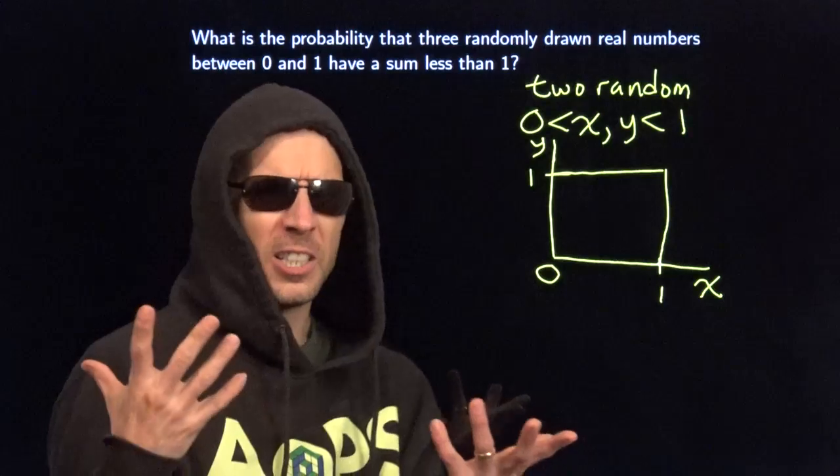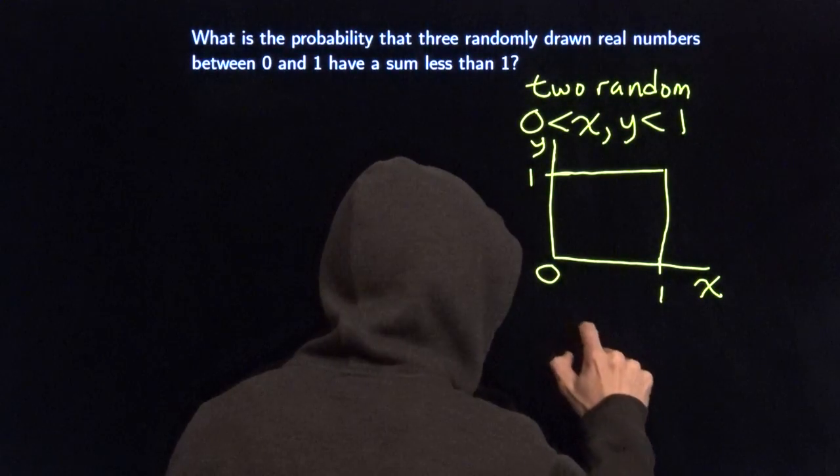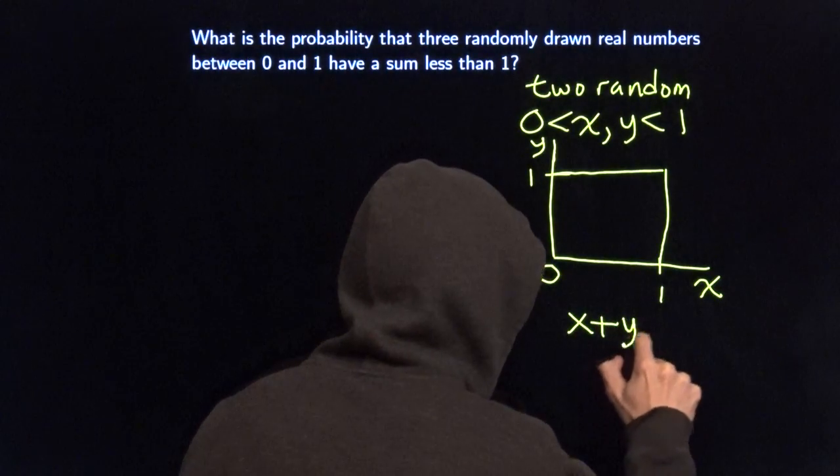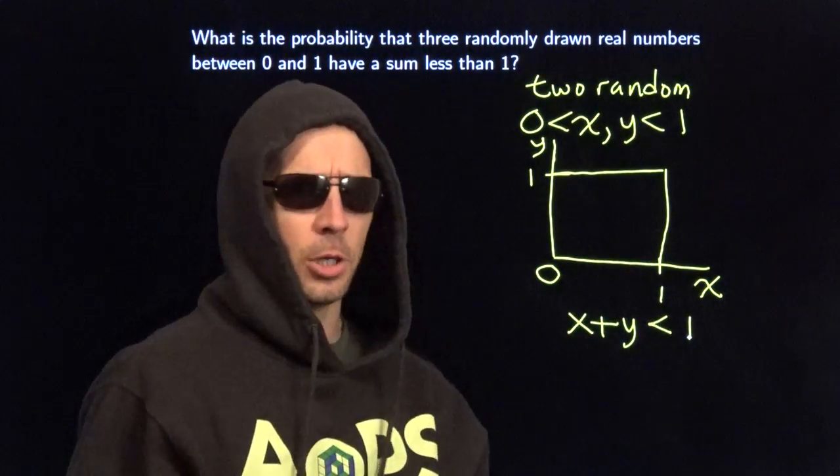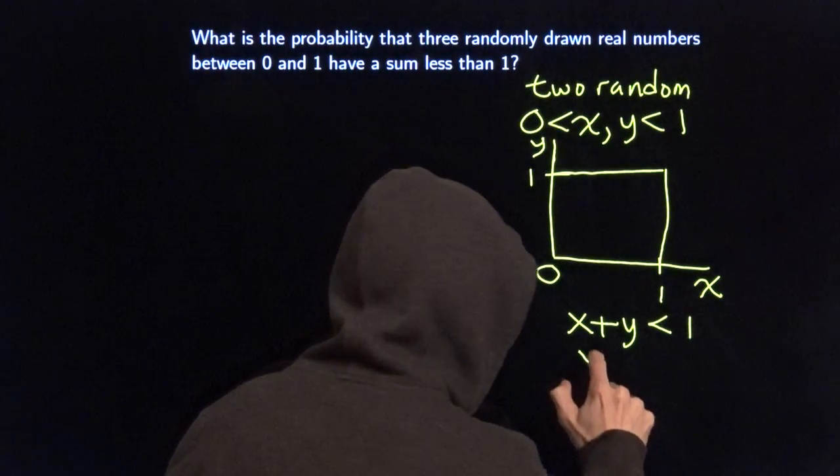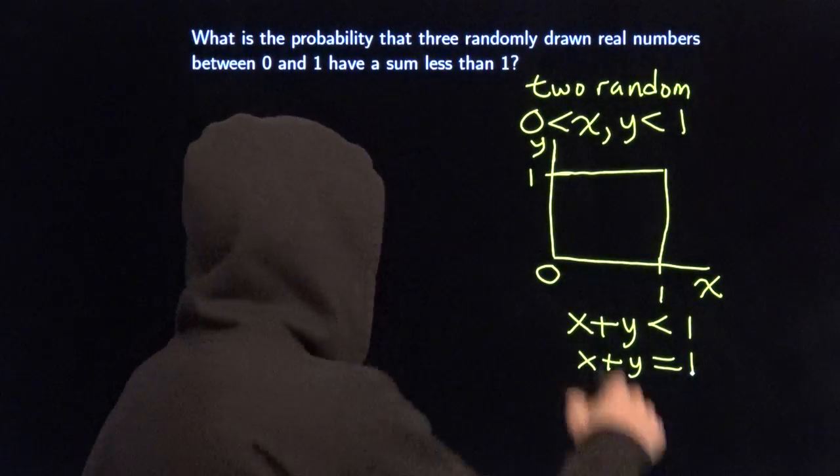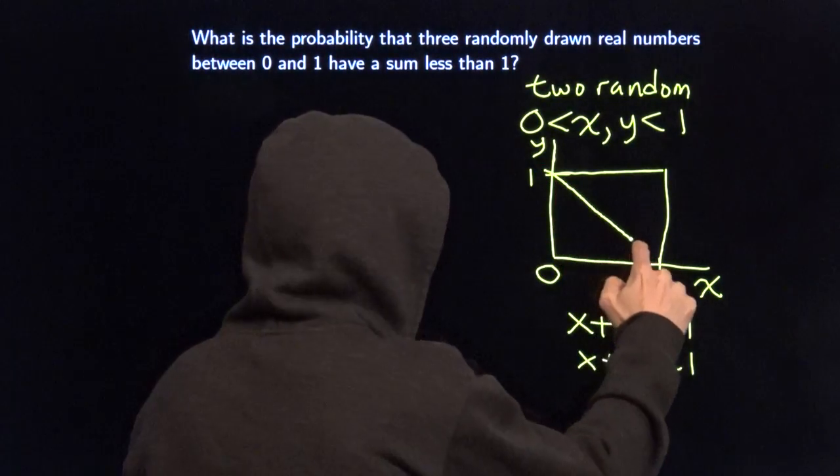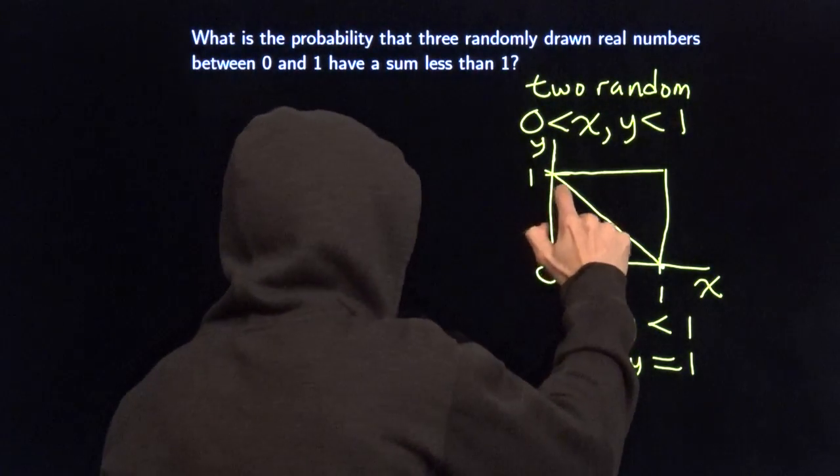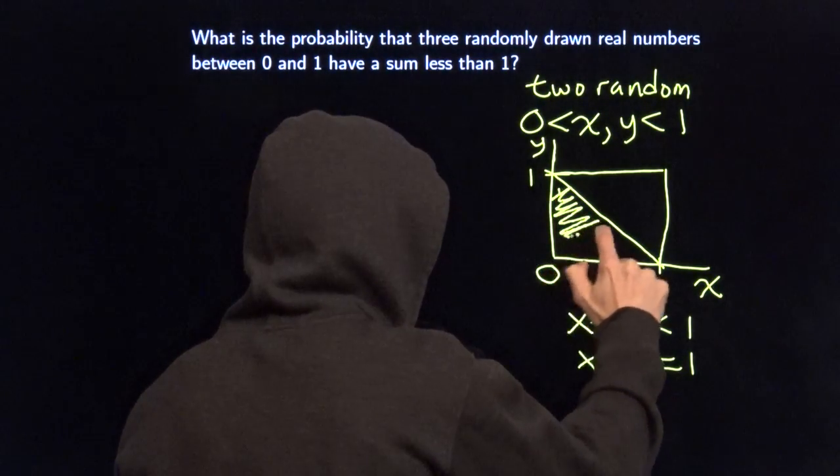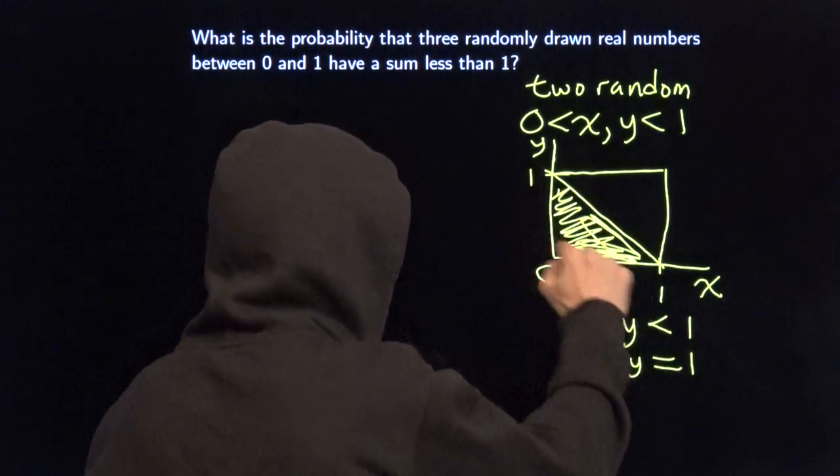Well, now what's our desired region? We want the sum of these numbers to be less than one. We want X plus Y less than one. But where's that in this picture? We'll start off with X plus Y equals one. X plus Y equals one. That's just a line. That's this line right here. X plus Y less than one. That's everything below the line. It's everything down here.